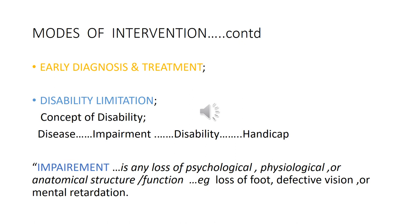The next modes of intervention are early diagnosis and treatment of the disease. Early detection and treatment are the main interventions of disease control — if the disease is diagnosed earlier and treated properly, the prognosis will be good and there will be no disability. If the disease is controlled at this level, disability can be prevented.